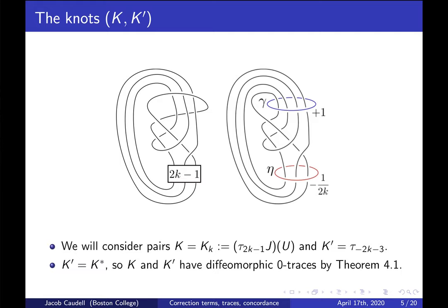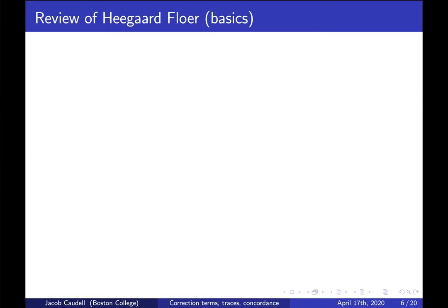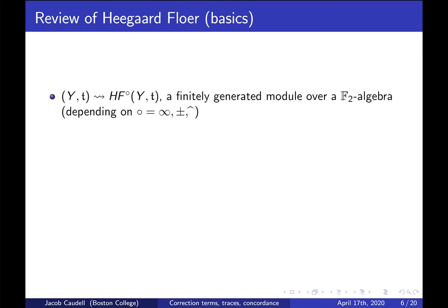We're going to use Heegaard Floer homology to distinguish K and K' in smooth concordance. If I have a 3-manifold equipped with a spin-c structure, I get a finitely generated module over some F₂-algebra — depending on which flavor of Heegaard Floer homology I'm taking, which can be HF∞, HF⁺, HF⁻, or HF-hat. This is an invariant of a spin-c 3-manifold and comes in several flavors.